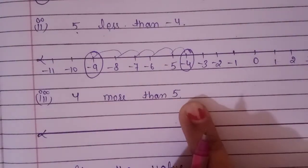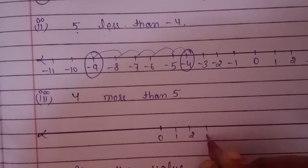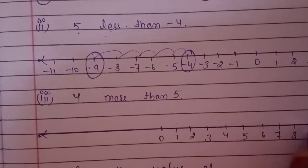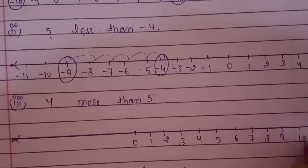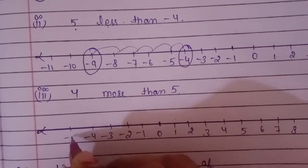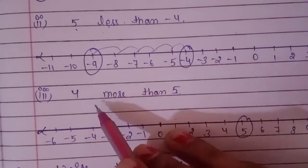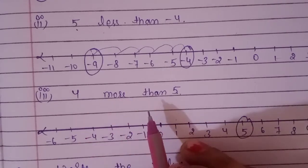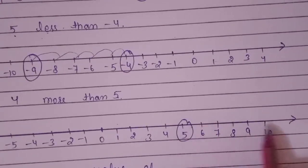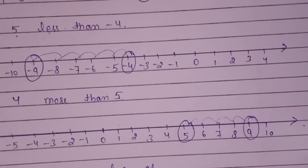Next: 4 more than 5. I draw the number line: 0, 1, 2, 3, 4, 5, 6, 7, 8, 9, 10, with negative numbers on the left. First I mark 5. Now I want to increase the number by 4 — for increasing, I move towards my right-hand side: 1, 2, 3, 4. This will be my answer — 9.